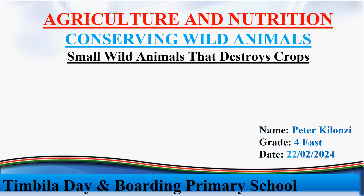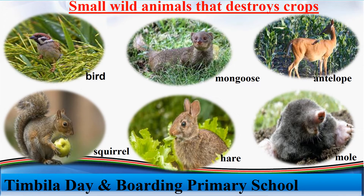Now we have small animals that destroy crops. Let's look at the pictures of these small animals that destroy crops. Look at the first picture — what is the name of that animal? We have birds. You can see that the bird is eating a certain type of crop. Which type of crop is being destroyed by that bird? Raise up your hands.